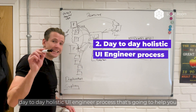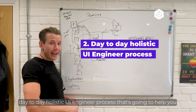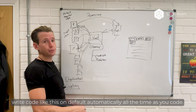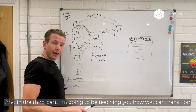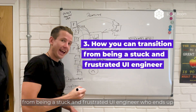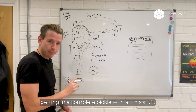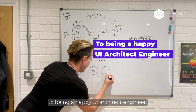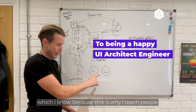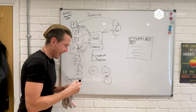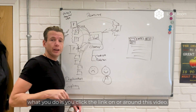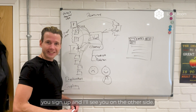In the second part, I'm going to be teaching you the day-to-day holistic UI engineer process that's going to help you write code like this automatically as you code. In the third part, I'm going to be teaching you how you can transition from being a stuck and frustrated UI engineer who ends up in a complete pickle with all this stuff, to being a happy UI architect engineer. If you'd like to join me on this web training class, click the link on or around this video, you'll get taken through to another page, sign up and I'll see you on the other side.